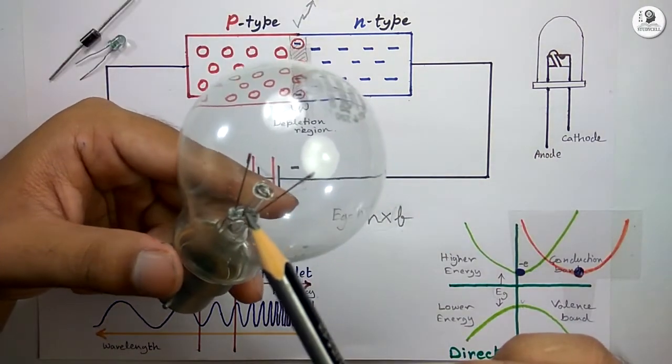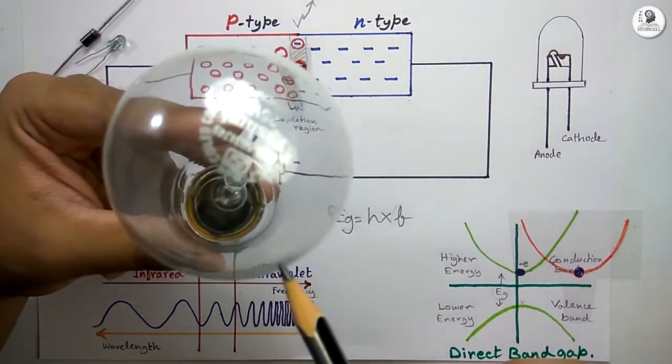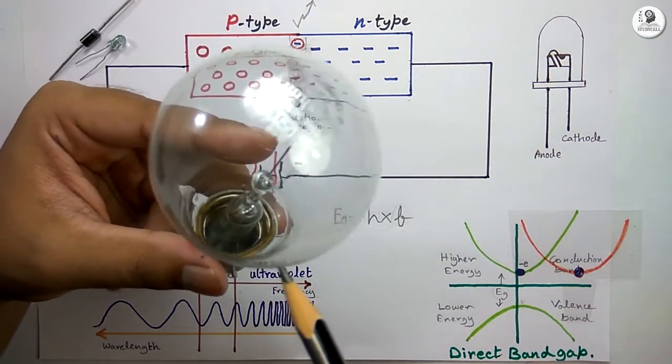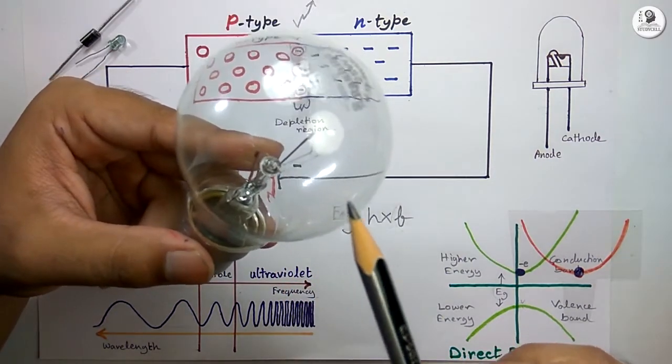In case of the filament lamp, we have to heat the filament at first, then light starts emitting from that filament. Most of the energy is wasted due to heat energy for this incandescent filament lamp.